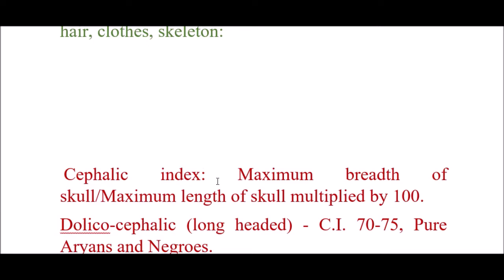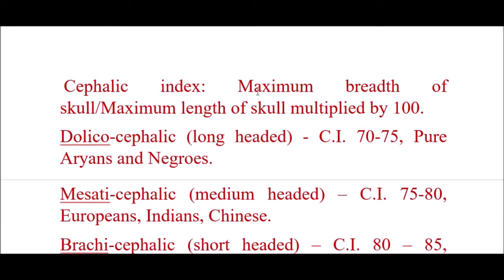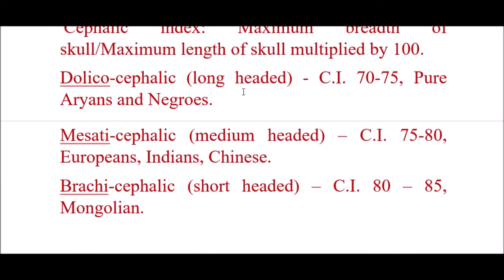Based on cephalic index, we can differentiate different races. The cephalic index is the maximum breadth of the skull divided by maximum length of the skull, multiplied by 100. Long-headed or dolichocephalic skulls have a cephalic index between 70 to 75 — these are pure Aryans and Negroes. Mesocephalic or medium-headed have an index of 75 to 80 — these are Europeans, Indians, and Chinese. Brachycephalic or short-headed have an index of 80 to 85 — these are Mongolians.